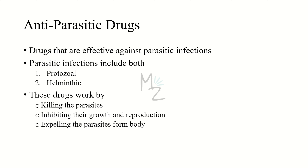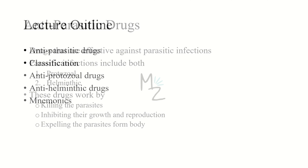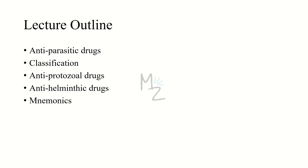If you want to know about parasites in detail, there's a detailed playlist on parasitology — find its link in the description. Protozoa are eukaryotic, unicellular organisms, and helminths are worms. These drugs work by killing the parasites or by inhibiting their growth and reproduction, and by expelling the parasites from the body.